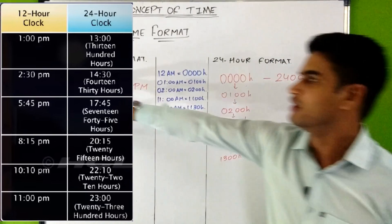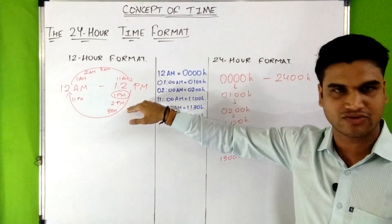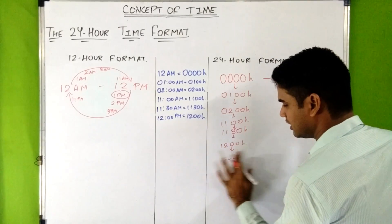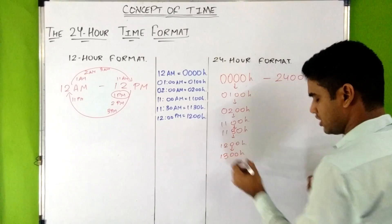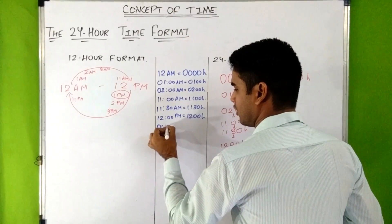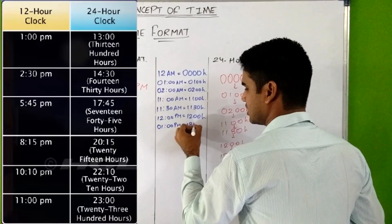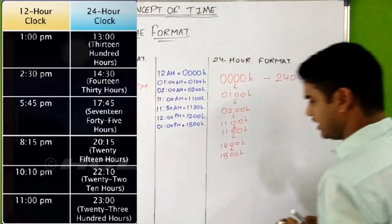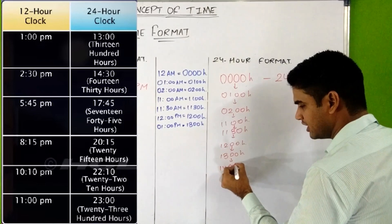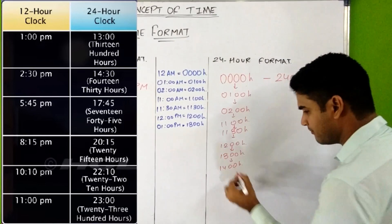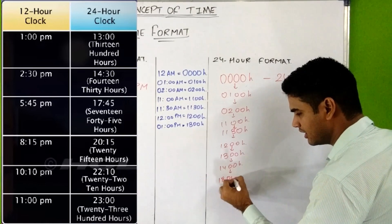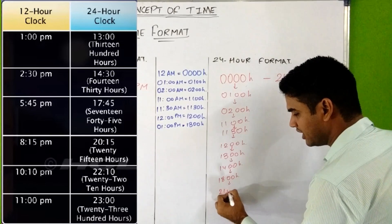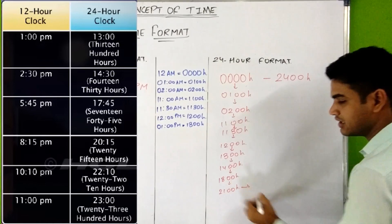In the 12-hour format the numbers repeat — after 12 AM comes 1 AM, and similarly after 12 PM comes 1 PM — but in 24-hour format we continue up to 2400. So 1 PM is 1300 hours. Similarly, 2 PM is 1400 hours, 6 PM is 1800 hours, and 9 PM is 2100 hours.